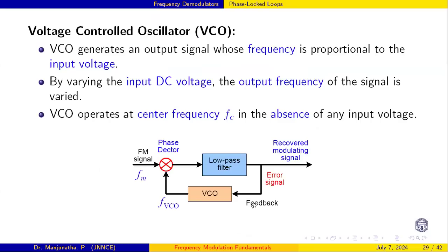Here we have the message signal, the received FM signal, and f-VCO. From the PLL we have to recover back the original modulating signal. The VCO generates an output signal whose frequency is proportional to the input voltage, also called the error signal. This is a feedback system, so based on the output it generates a frequency by varying the input DC voltage, and the output frequency of the signal is varied accordingly.